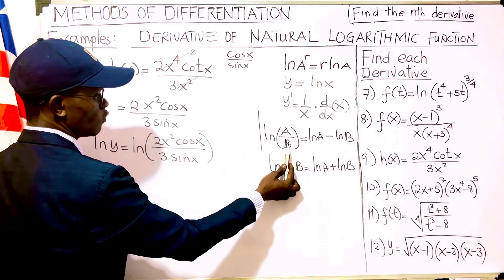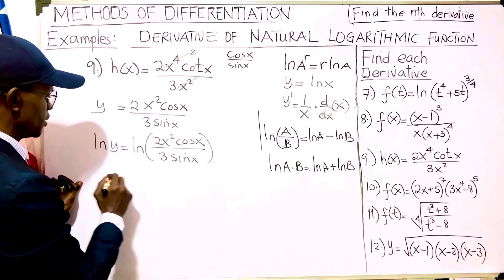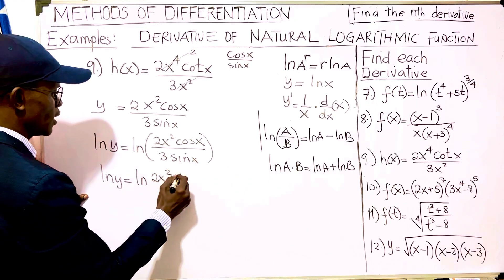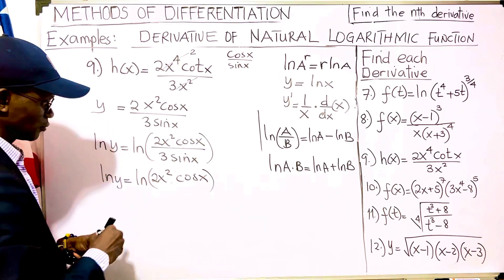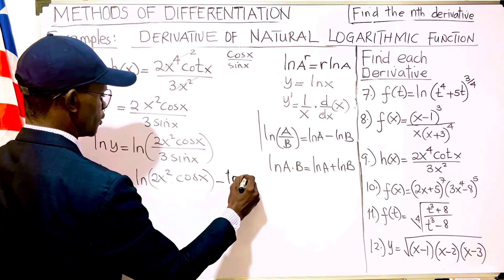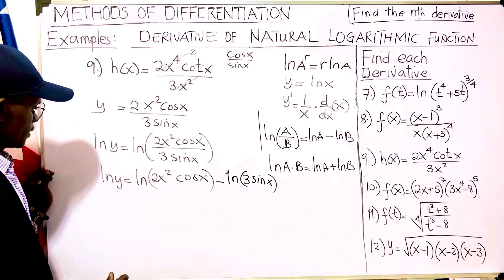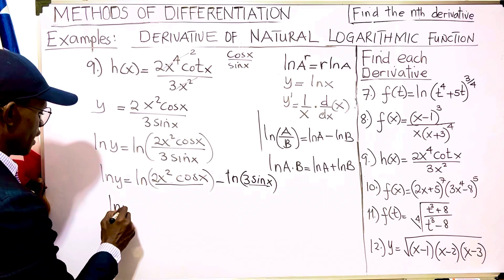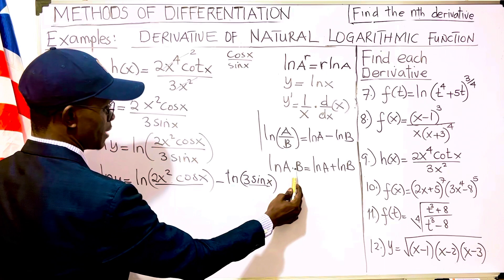We know that ln(a/b) equals ln(a) minus ln(b). So this is our a and this is our b, giving us ln(y) equals ln(2x squared cos(x)) minus ln(3 sin(x)). We can also expand each of these terms further.